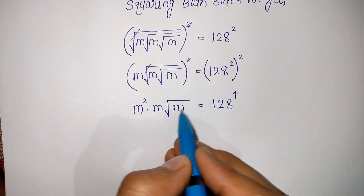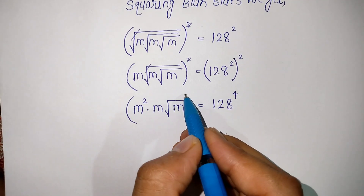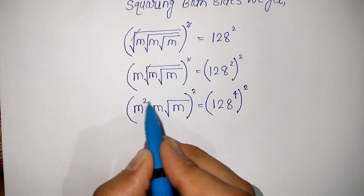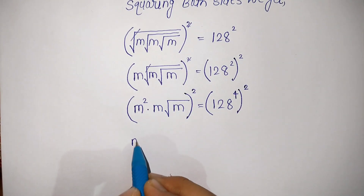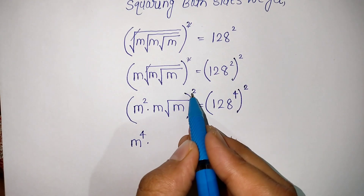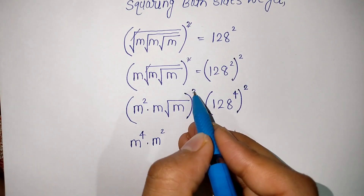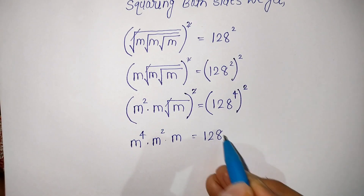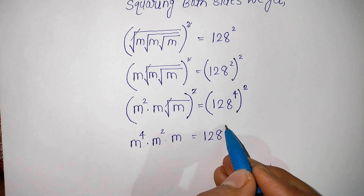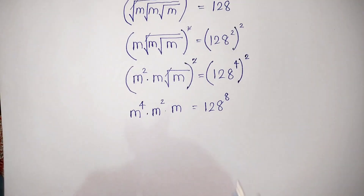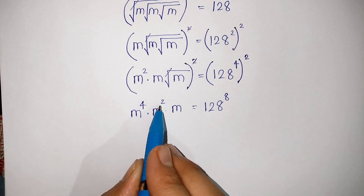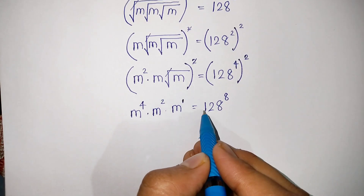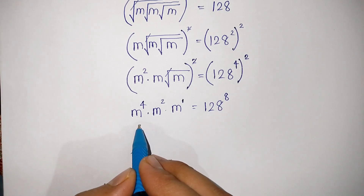To remove this last square root we have to again square both sides. So M squared — 2 into 2 gives M to the power 4 — into M is equal to 128 to the power 8, since 4 into 2 is 8. Now M to the power 4 into M to the power 2 into M to the power 1 — that is M — is equal to 128 to the power 8. Using the exponential rule: